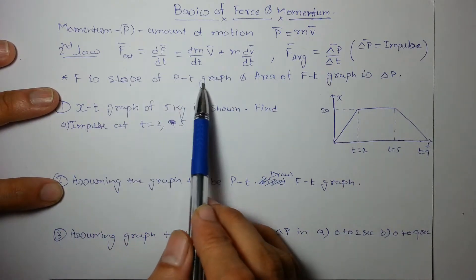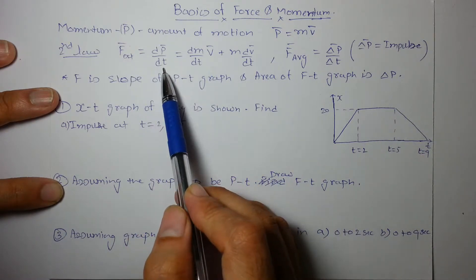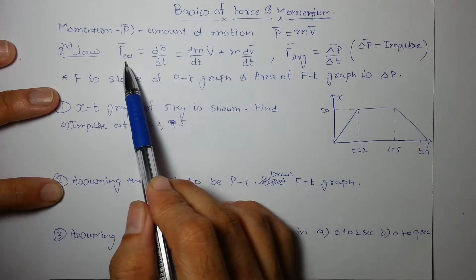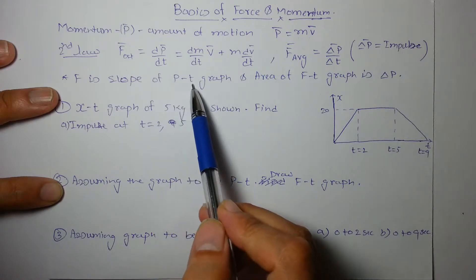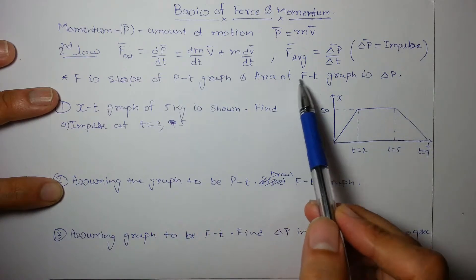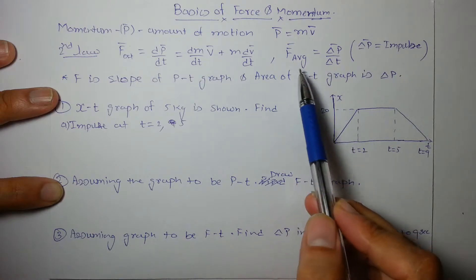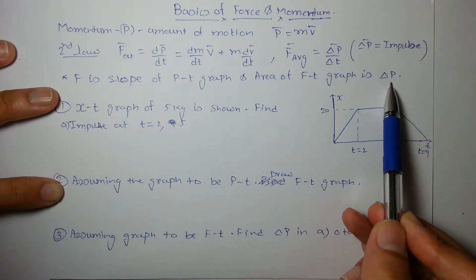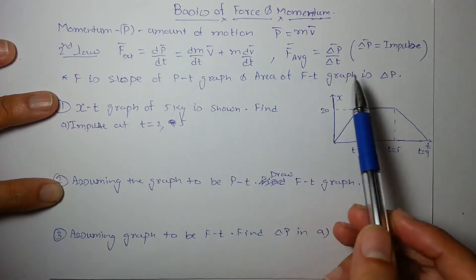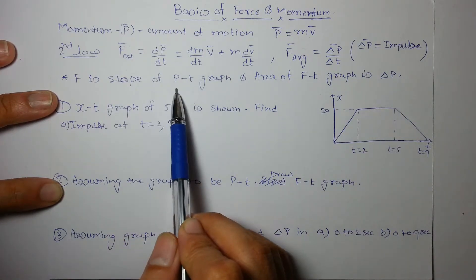From this we can say F is the slope of the p-t graph, since F = dp/dt. So the external force is the slope of the momentum-time graph. The area of the F-t graph is nothing but the change in linear momentum.